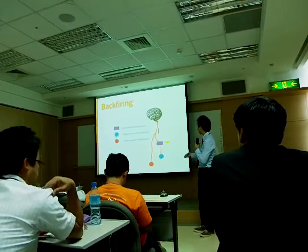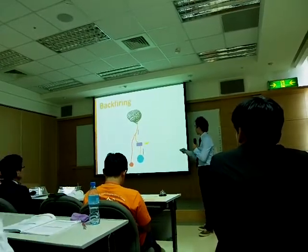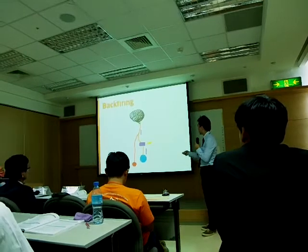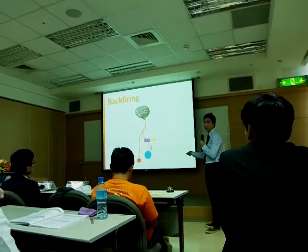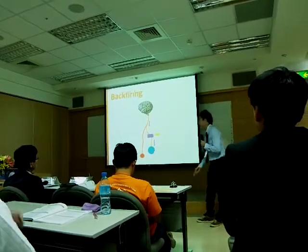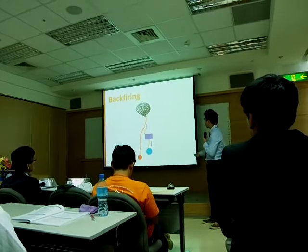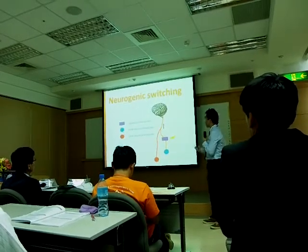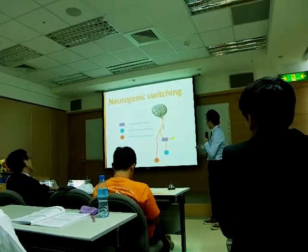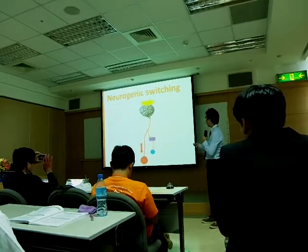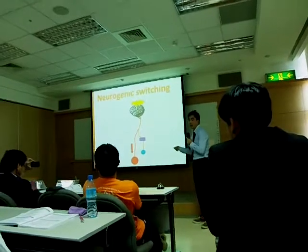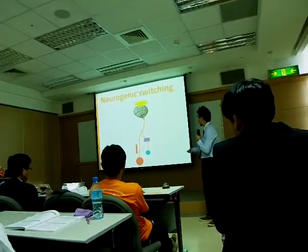How about the abnormal one? By backfiring, the signal not only sends to the brain, but also transfers down the axon to the distal part. So when you hurt your hip, you may get inflammation on your knee. And with neurogenic switching, the injury sends a signal to the brain, which reroutes the inflammatory impulse to another part of the body, causing inflammation there.